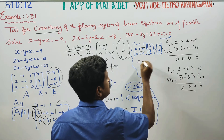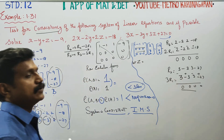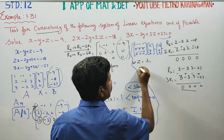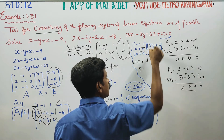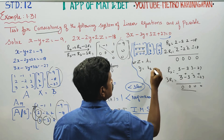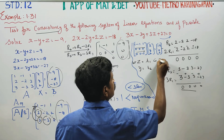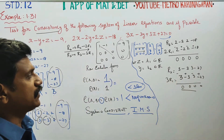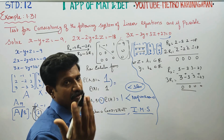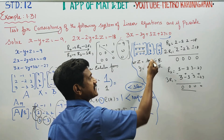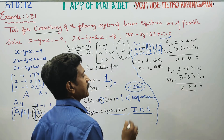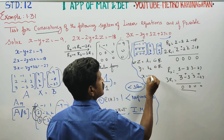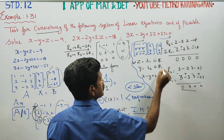Let z equal to an arbitrary constant t2, and let y equal to an arbitrary constant t1, using back substitution. From the first row: 1 times x minus 1 times y plus 1 times z is equal to minus 9.